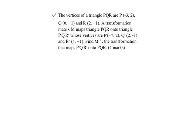Question 14. The vertices of a triangle PQR are P(-3, 2), Q(0, -1), and R(2, -1). A transformation matrix M maps triangle PQR onto triangle P prime, Q prime, R prime, whose vertices are P prime(-7, 2), Q prime(2, -1), and R prime(4, -1). Find the inverse of M, which is a transformation that maps P prime, Q prime, R prime onto PQR.